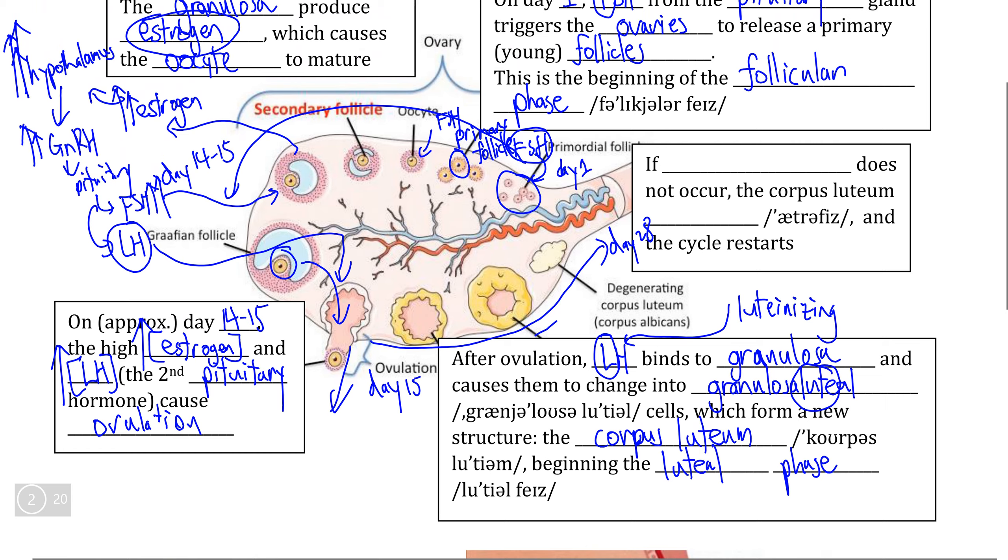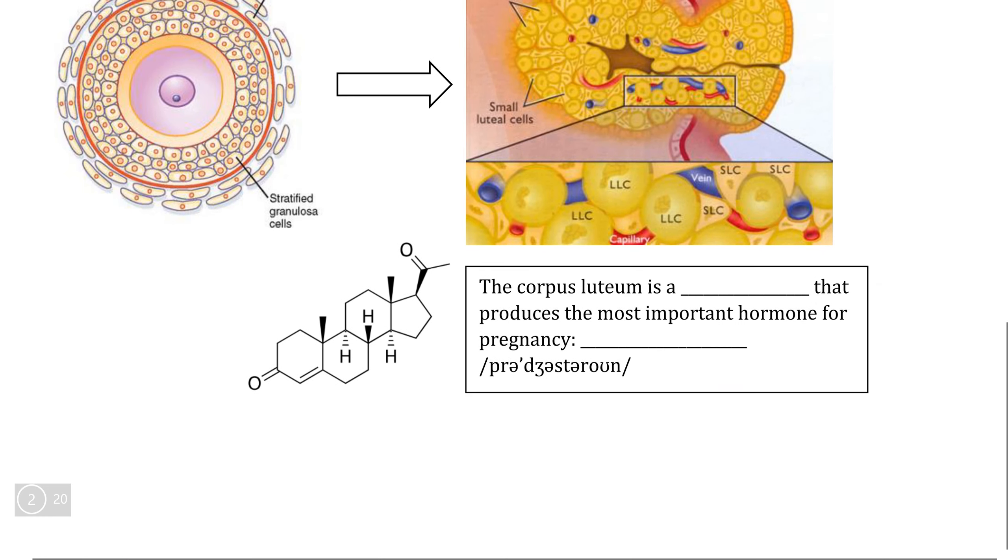As we looked at, estrogen is the primary female reproductive hormone, but it is not the only female reproductive hormone. The corpus luteum is actually a gland that has the function of producing the second female reproductive hormone, progesterone, which is not found in men, because progesterone is also called the pregnancy hormone.